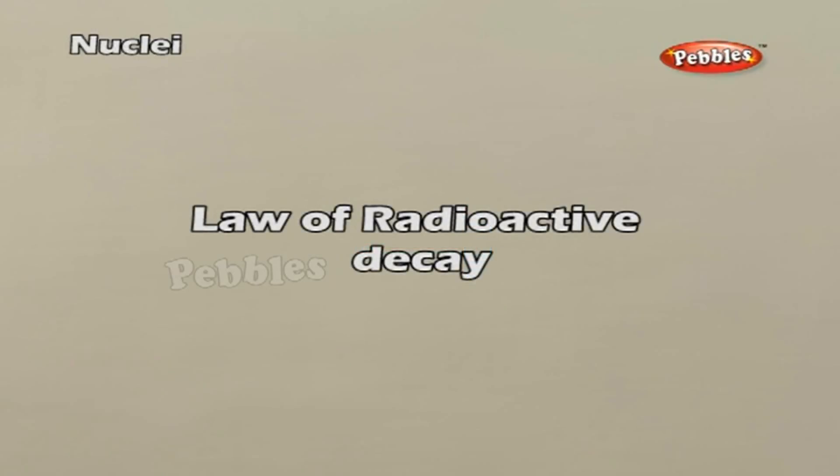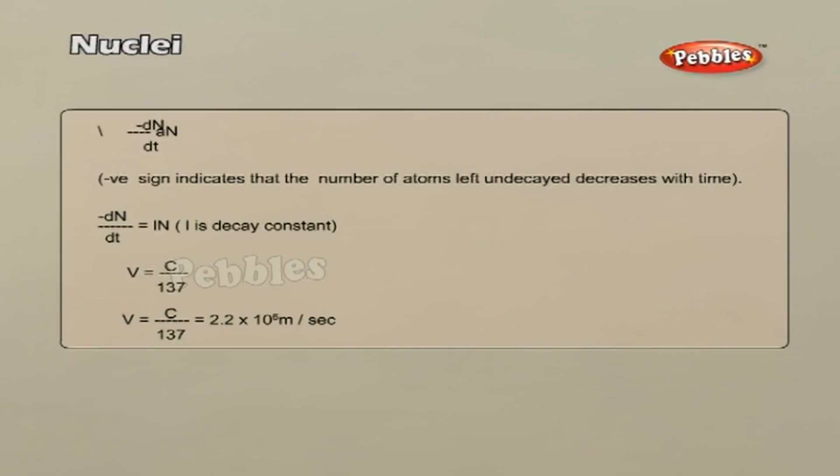Law of radioactive decay. In any radioactive sample which undergoes alpha, beta or gamma decay, it is found out that the number of nuclei undergoing the decay per unit time is proportional to the total number of nuclei in the sample. If n is the number of nuclei in the sample and delta n undergoes decay in the time delta t, then delta n by delta t is proportional to n or delta n by delta t equals lambda n where lambda is called the radioactive decay constant or disintegration constant.